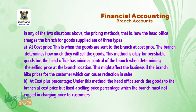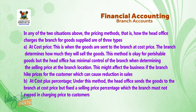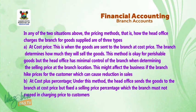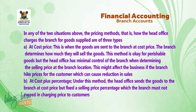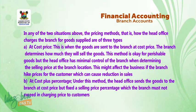The first method is at cost price. This is when goods are sent to the branch at cost price and the branch determines how much they will sell the goods. This method is suitable for perishable goods, but the head office has minimal control over the branch when determining the selling price, which might cause a reduction in sales if the branch sets prices too high for customers.